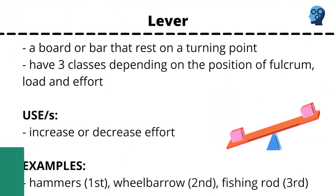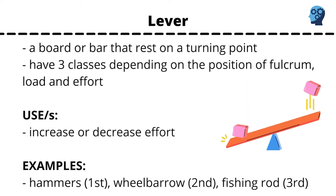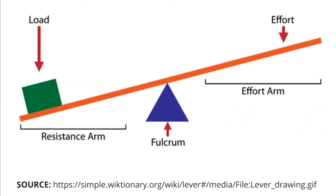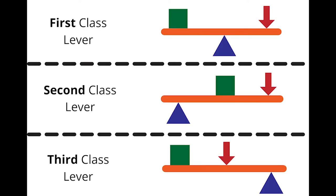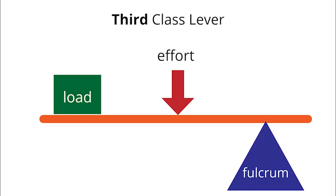Lever. A board or bar that rests on a turning point. It moves around the point to increase or decrease an effort. It is composed of a fulcrum, which is its turning point; effort, which is where the force is exerted; and load, or the counterweight, which when placed differently results in three types of lever: the first class lever, second class lever, and third class lever.